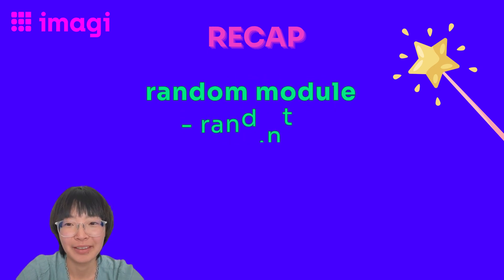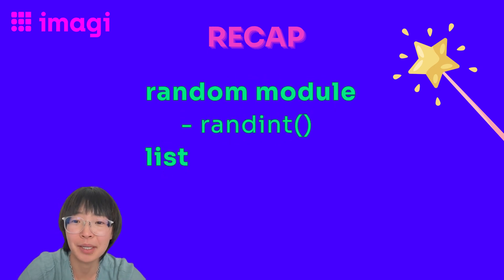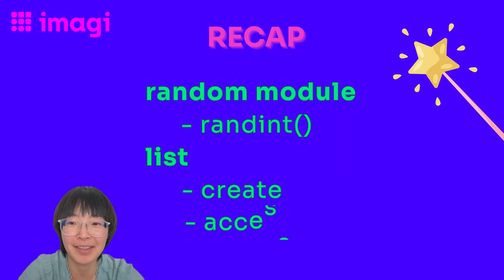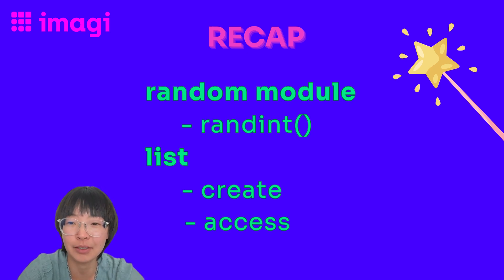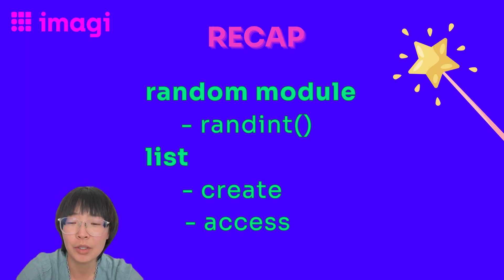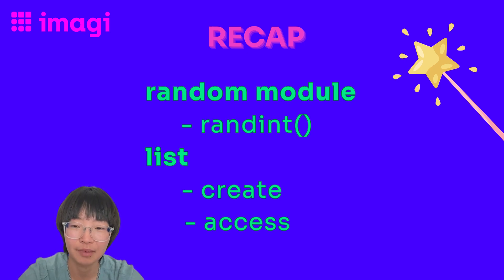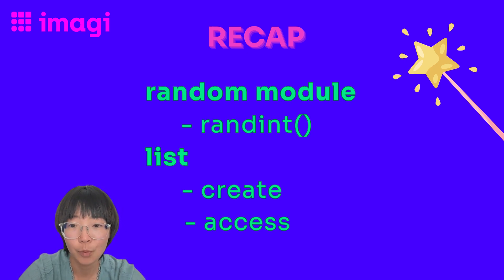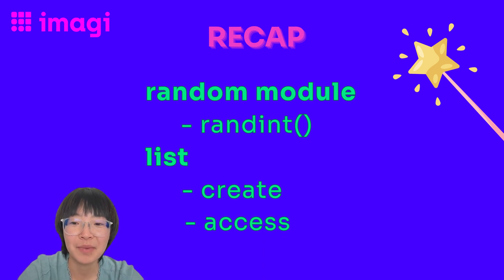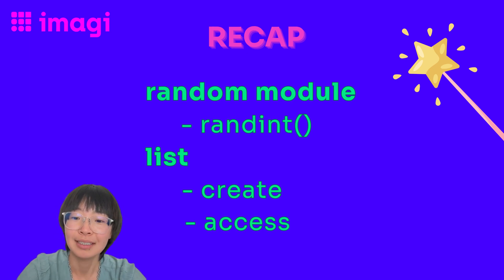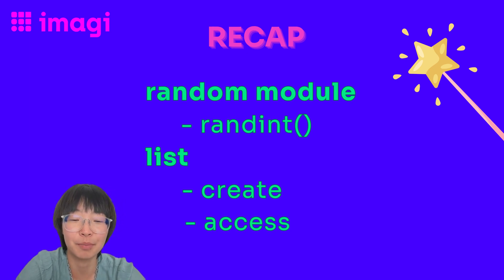All right, now it's time to recap what we learned. Today, we embarked on a magical journey, uncovering the mystical powers of Python's random module and the organized charm of lists. We dived into the endless possibilities that the random module offers, pulling surprises out of our coding hat, just like a skilled magician. We looked at an example of using the random function. Then we learned about lists and how they keep information neatly ordered and ready for action. We learned how to create a list and how to access data in a list. Remember, the random module is all about unpredictability and fun, while lists bring order and structure to our coding adventure. Combine these, and you have the perfect potion for some thrilling programming challenges.